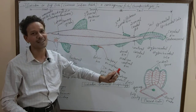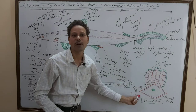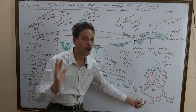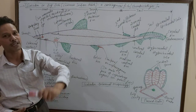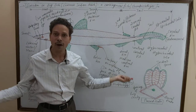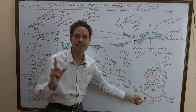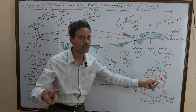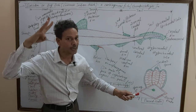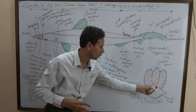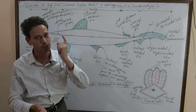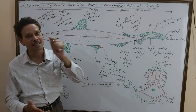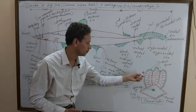The entire skin of Scoliodon, the cartilaginous fish, is dry and rough because it possesses placoid scales — very important for competition. But in case of Labeo, the bony fish, the scales are cycloid. Placoid scales have a trident-like radiant spine and a basal plate which is rhomboidal, and this basal plate possesses a central cavity called the pulp cavity.